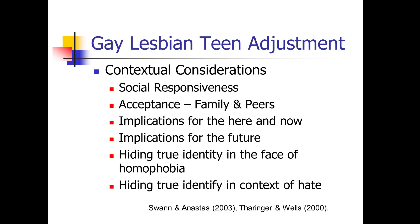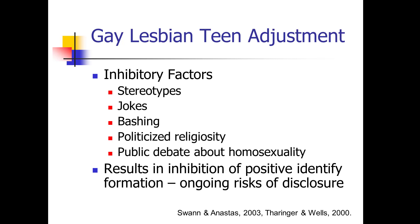Contextual considerations include social responsiveness to the teen, acceptance by family and peers, implications for the here and now — as adolescents are very much here-and-now oriented — implications for the future, hiding true identity in the face of homophobia, and hiding true identity in the context of hate. Inhibitory factors in teen adjustment include stereotypes, jokes, bashing, discrimination, politicized religiosity, and ongoing public debate about homosexuality. These factors can result in inhibition of positive identity formation and ongoing risks of disclosure.